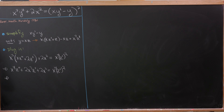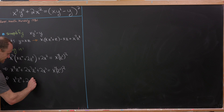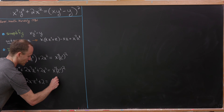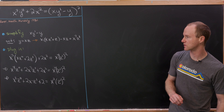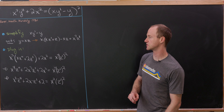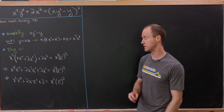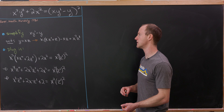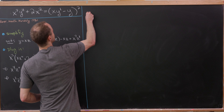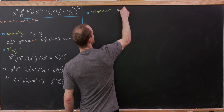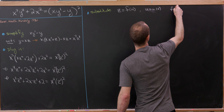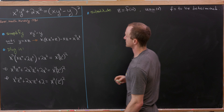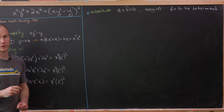Dividing everything by x² leaves us with x²z'' + 2xz' + 2 = x²(z')². We still have a nonlinear differential equation, so we need another substitution. We'll set z = f(u) where u is a function of x and f is to be determined — we'll be able to identify a nice form for f as the calculation proceeds.